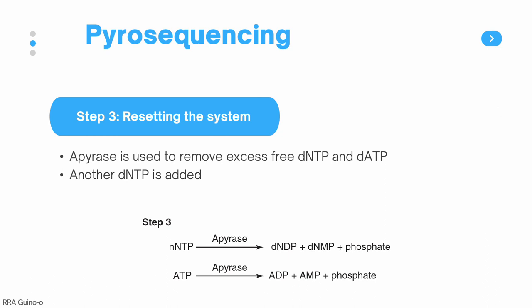The last step in pyrosequencing is resetting the system. Apyrase is used to remove excess free dNTP and dATP so that another dNTP can be added for the next cycle.